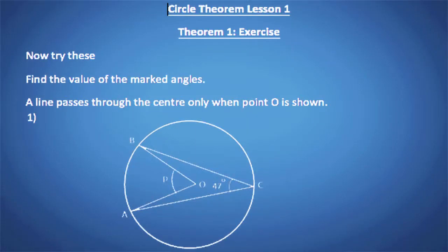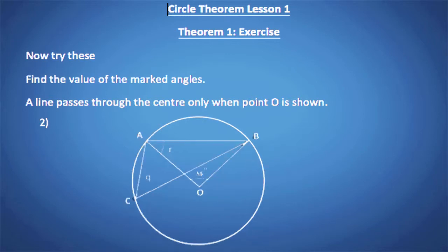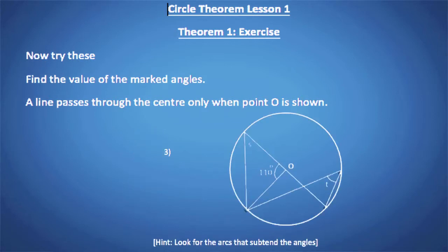Now find the value of the marked angles — a line passes through the center only when point O is shown on the diagram. Question 1: find the value of angle P. Question 2: find the values of angles Q and R, given the angle of 88 degrees. Question 3: find the values of angles S and T, where O is the center. Take time and work them out.